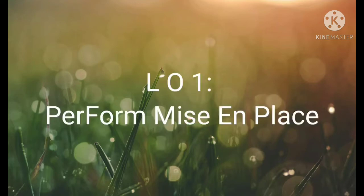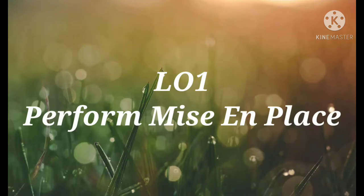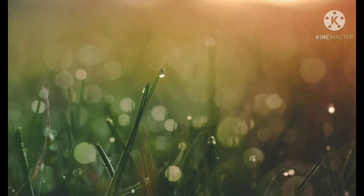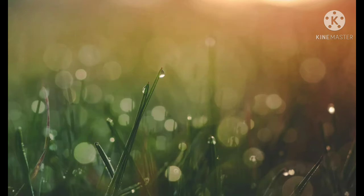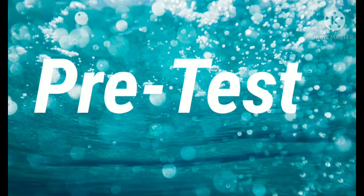For this topic, we are going to cover shellfish and other types and variety forms of fish and seafood. LO1.1: Prepare the kitchen tools, equipment, and ingredients based on required standards. LO1.2: Identify the types, varieties, and market forms of seafood, volume, and composition of fish and shellfish. LO1.3: Assemble ingredients according to recipes, recipe cards, or enterprise standards. Identify the standards and processes.